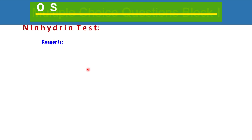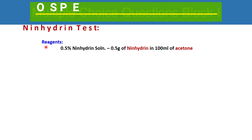So let's start from the ninhydrin test. The reagents used in this test are 0.5% ninhydrin solution. You may be asked to tell the reagents involved in the ninhydrin test — this might be an OSPI question, a VIVA question, or a grand VIVA question. There are only two chemicals: ninhydrin itself — 0.5 grams of ninhydrin dissolved in 100 ml of acetone.